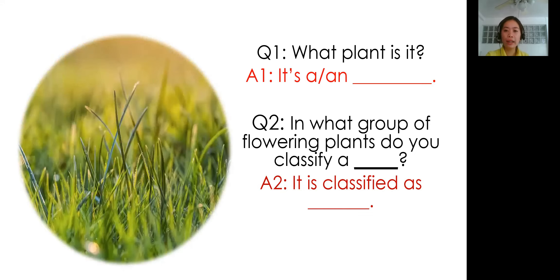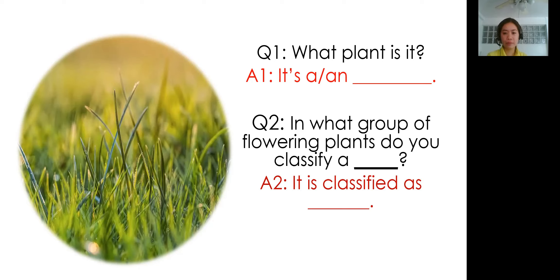Next one. What plant is it? It's grass! Correct! In what group of flowering plants do you classify grass? It is classified as monocotyledons.